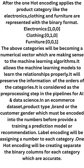One hot encoding allows the machine learning model to learn relationships properly. It preserves the information and order of categories. It is considered a pre-processing step in AI and data science pipelines. In an e-commerce dataset, product type, brand, or customer gender must be encoded into numbers before training a prediction model or recommendation system.